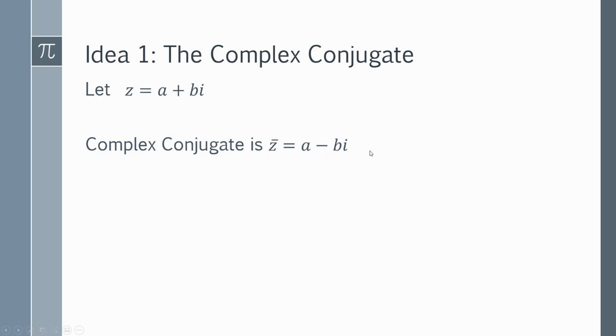And likewise, if you had a complex number that was a minus b i, you can get the complex conjugate by switching the minus to a plus. So simply change the term in front of the coefficient of i and you get the complex conjugate.